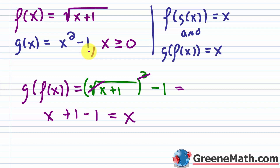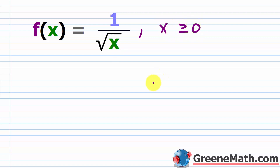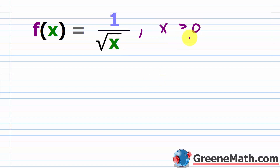Let's take a look at one more example. Suppose we have f of x equals one over the square root of x. We already know this has a domain restriction: first, you can't take the square root of a negative, so x would need to be greater than or equal to zero. But it's also in the denominator, so x can't be zero. Therefore, the domain restriction is x greater than zero. Now what's the range?